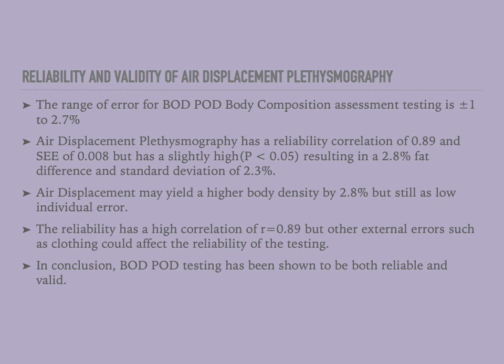What this means is that there could be an error in an overestimation by 2.8 percent. For example, if your percent fat mass is 25 percent, the test could calculate it as 27.8 percent. The reliability has a high correlation of R = 0.89, but other external errors such as clothing could affect the reliability of the testing and cause it to be a little lower. In conclusion, the BODPOD testing has been shown to be both reliable and valid.